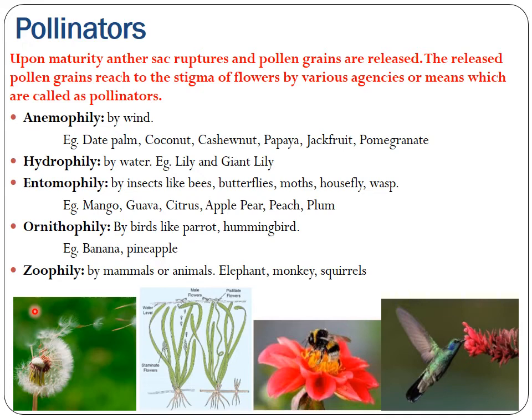There are different types of pollinators. Anemophily means pollination occurring by wind, commonly seen in date palm, coconut, cashew nut, papaya, jackfruit, pomegranate, etc. Next is hydrophily, where pollination occurs through water, with examples in lily and giant lily. In entomophily, insects like bees, butterflies, moths, and housefly help in pollination.